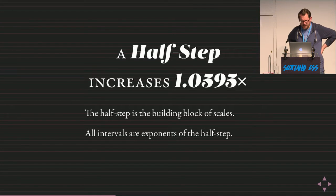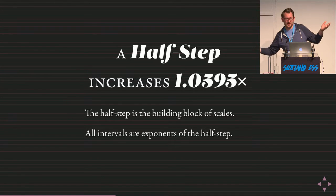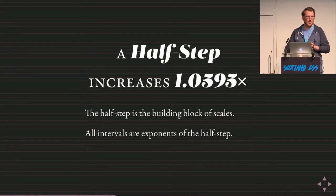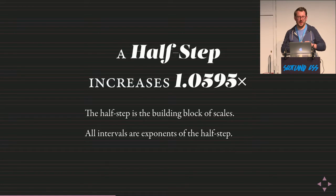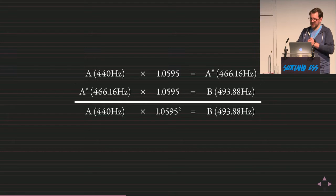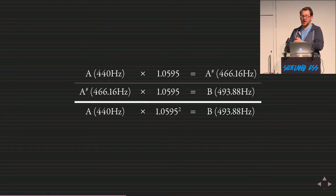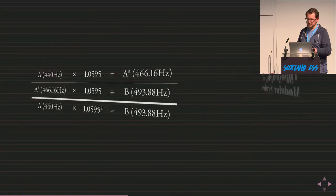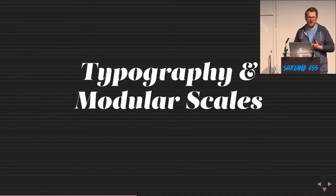Then there's the half step, a precise ratio of approximately 1.0595. You don't need to memorize that — no quiz. The half step is the building block of all western music scales. All other intervals in the scale are exponents of the half step. To go from A to A-sharp, you multiply A's frequency by 1.0595. To go up another half step, multiply A-sharp by 1.0595 again — now two half steps from A. Squaring 1.0595 gives the same result as two separate multiplications.